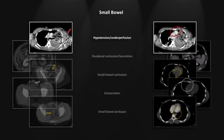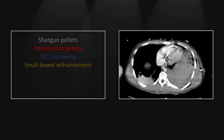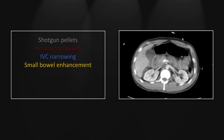Our first case is small bowel with hypotension and underperfusion. This is obviously an extensive injury. Shotgun pellets are present throughout the axillary region. There are intracardiac densities consistent with venous thromboembolism, a common finding in shotgun wounds to the axillary region. The subclavian vein will transmit these pellets quite readily. We are interested in the narrowing of the IVC, especially at the level of the renal veins, which is particularly indicative of a low-volume state.